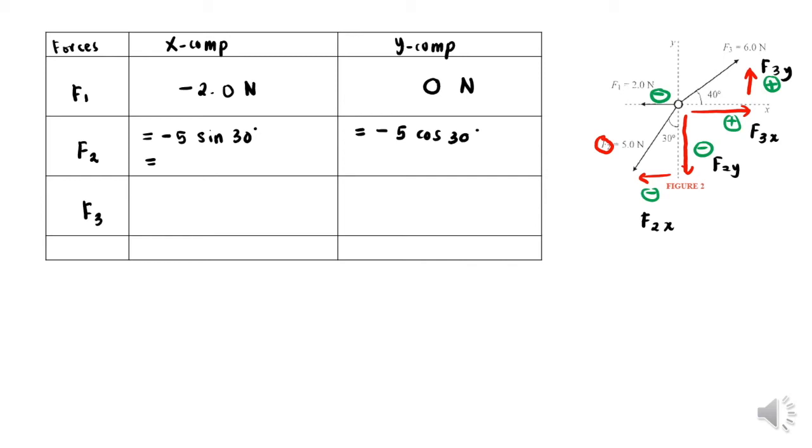Calculate using your calculator and you will get -2.5 N for F2x and -4.33 N for F2y. The last force, F3, is 6 cos 40° for the x component and 6 sin 40° for the y component. Press your calculator again to find the value: 4.6 N for F3x and 3.86 N for F3y.